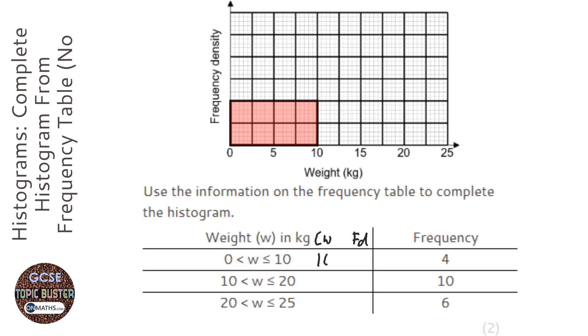So class width for the first one is 10, and we know that to find the frequency density, you do frequency divided by class width, which is going to be 0.4. So if that's 0.4, that's going to be 0.2, 0.6, 0.8, 1, 1.2.